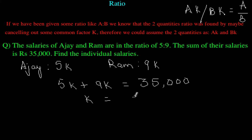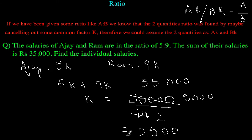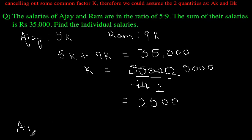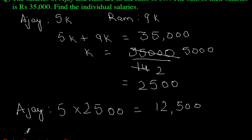So K is nothing but 35,000 divided by 14. 5 plus 9 is 14. This goes by 7, so this is 5,000, and we get the value of K as 2,500. So the salary of Ajay is 5 into K, which is 2,500. This comes out to be 12,500. And similarly for Ram, the salary is 9K, which is 9 into 2,500, and this comes out to be 22,500. This is how we find out the two salaries.